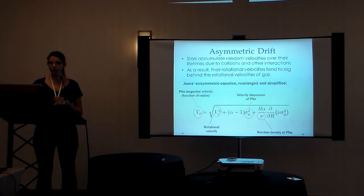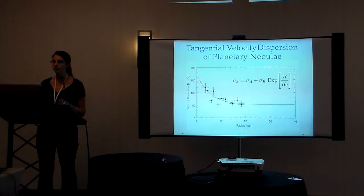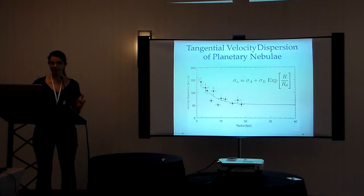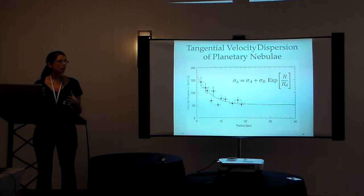And so here I've shown an example of the tangential velocity dispersion profile of the planetary nebulae. And this was calculated using only the major axis, or points along the major axis of our velocity field, as we're interested only in the tangential velocity dispersion. And you can see from this plot that it follows a roughly exponential trend. However, rather than going to zero at large radii, it tends to level out at about 50 kilometers per second. This indicates that the planetary nebulae in our survey do experience significant random motions at large radii.